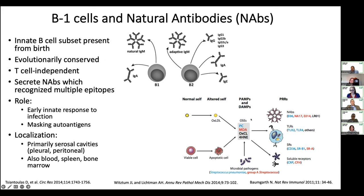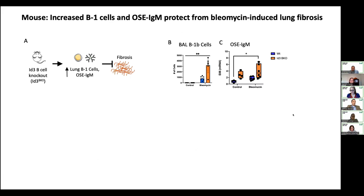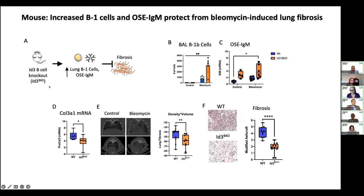B1 cells respond to different kinds of damaged self, like oxidized LDL or apoptotic cells, to modulate the immune response and the response to injury. In prior work in the lab using mouse models, we asked what happens if we increase the number of these B cells and IgM. Using a lung injury model called bleomycin, we showed these cells are recruited to the lung where they make oxidation-specific IgM, and those things are correlated with protection from fibrosis.